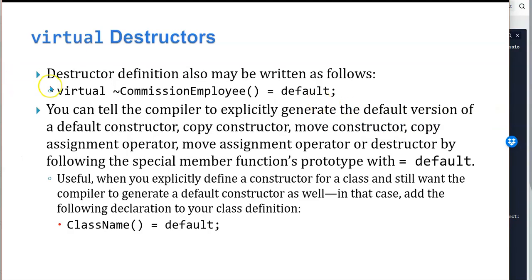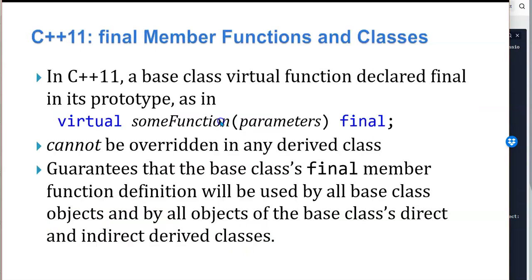We define the virtual destructor like this: virtual commission employee destructor equals default. You tell the compiler to explicitly generate the default version of a default constructor, copy constructor, or move constructor by following the special member function prototype with equals default. This is usually useful when you define a constructor for a class but still want the compiler to generate a default one — in that case, add the declaration class name equals default to your class definition.